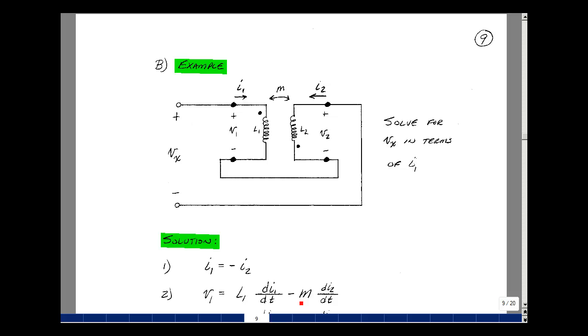In our next example, consider interconnecting the wires of a transformer. I'm going to connect this wire over here. I'm going to solve for V sub x in terms of I1. Notice here how the dot orientation is.